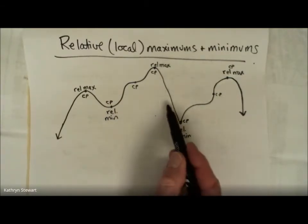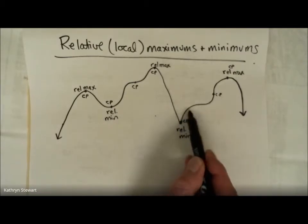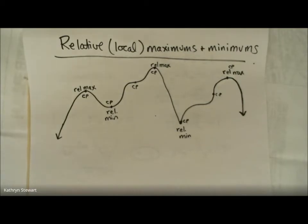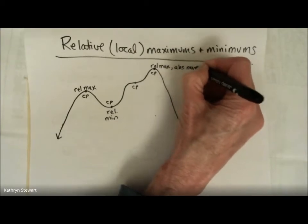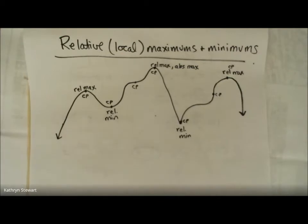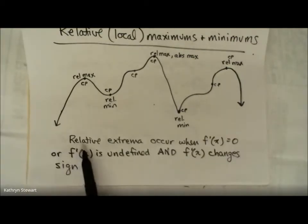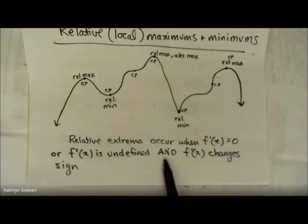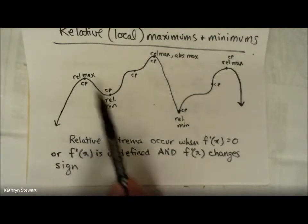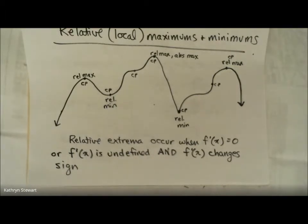Here's a critical point where the slope or the derivative is undefined, but that's still a relative min because the derivative goes from negative to positive. Relative maxes and mins can also be absolute maxes or mins. Relative extrema occur when f prime of x is 0 or f prime of x is undefined, and where the derivative changes sign — positive to negative gives a relative max, negative to positive gives a relative min.